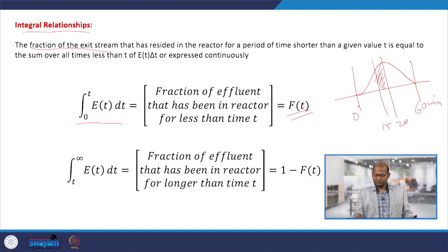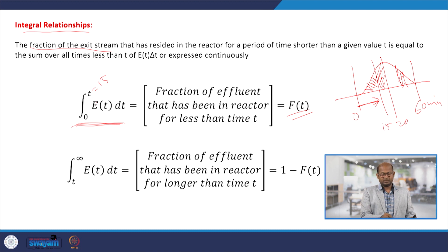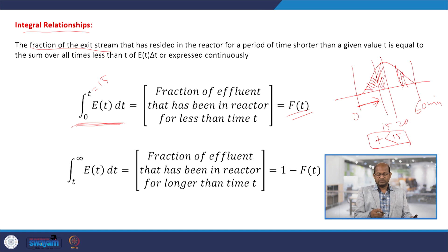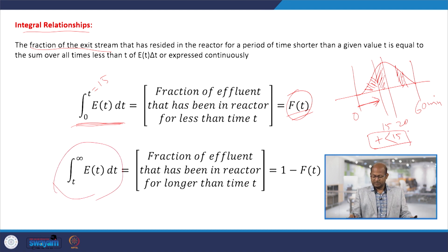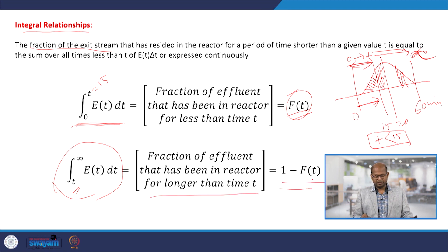From 0 to 15 minutes, how much quantity of the tracer has been leaving the reactor — from 0 to infinite time we can find out. At any time t, such as t = 15 minutes, if we know E(t) and integrate, we can find the fraction of material that has spent less than t time in the reactor. That integral equals F(t). The complement — from t to infinite — is the rest of the tracer that would leave, which we can express as 1 - F(t).